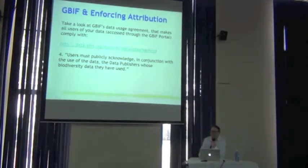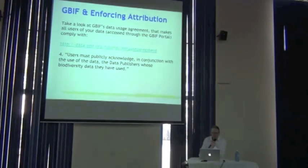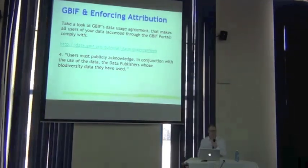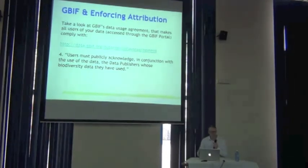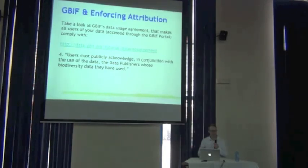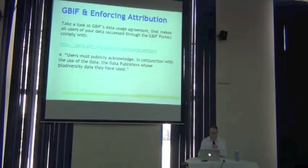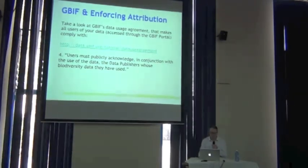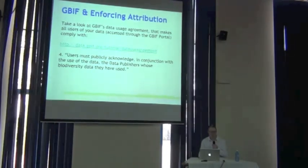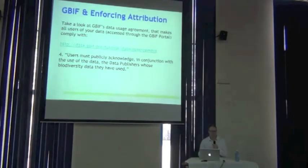Imagine your dataset is published on the GBIF network, available in the data portal for people to access, search for, and download. What does GBIF do to make sure that users of your data comply with certain usage agreements? Before you can start navigating the portal on your first visit, you have to comply with the usage agreement. Point number four states: users must publicly acknowledge, in conjunction with the use of the data, the data publishers whose biodiversity data they have used. GBIF tries its best to ensure that when people use your data, they provide attribution.